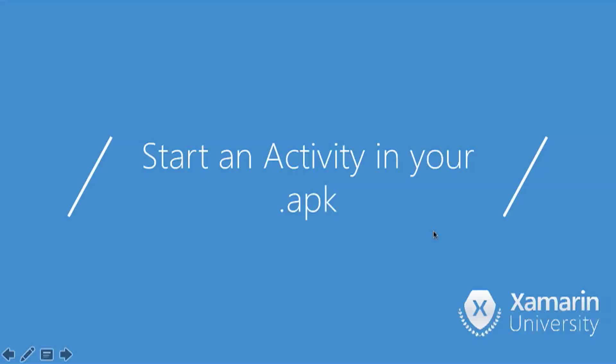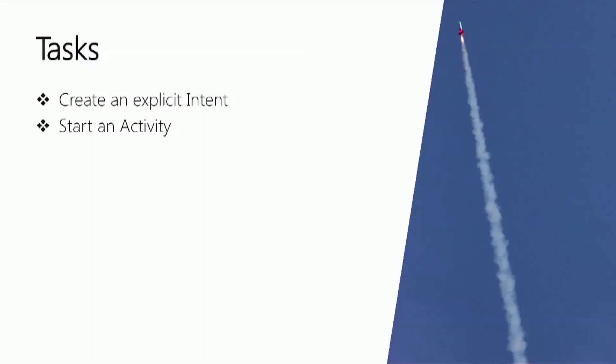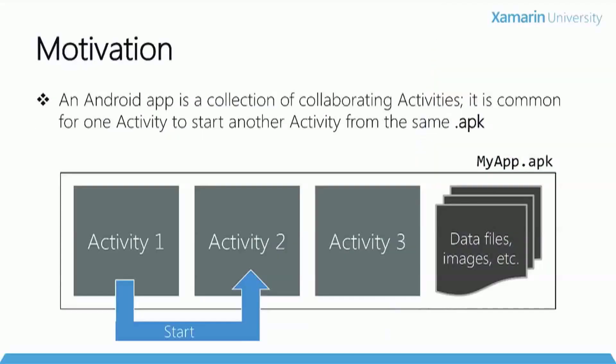Our first objective is to start an activity that's part of our application — one packaged inside our APK. To do that we'll create an explicit intent. An intent is the request we send to Android to start the activity. Explicit means we name the activity exactly — we explicitly identify which activity we want to start. Once we have the intent ready we can start the activity. This is one of the most common things you'll do for navigation inside your Android application.